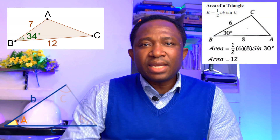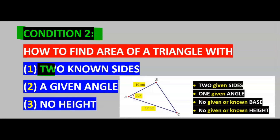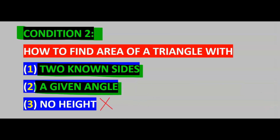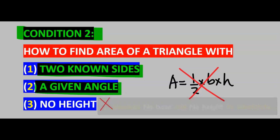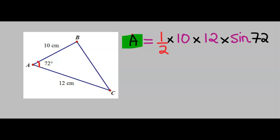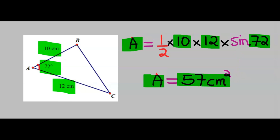In this condition, we are not concerned about the base and the height of the triangle. In condition 2, you are given two sides of a triangle and one angle — and here, no height. So half times the base times the height will not be needed. Here we are given two sides of the triangle and a known angle. The area of this triangle will be 1 over 2 multiplied by the two sides of the given triangle multiplied by sine of the given angle. In this formula, this must always be sine. And our area is 57 cm squared.